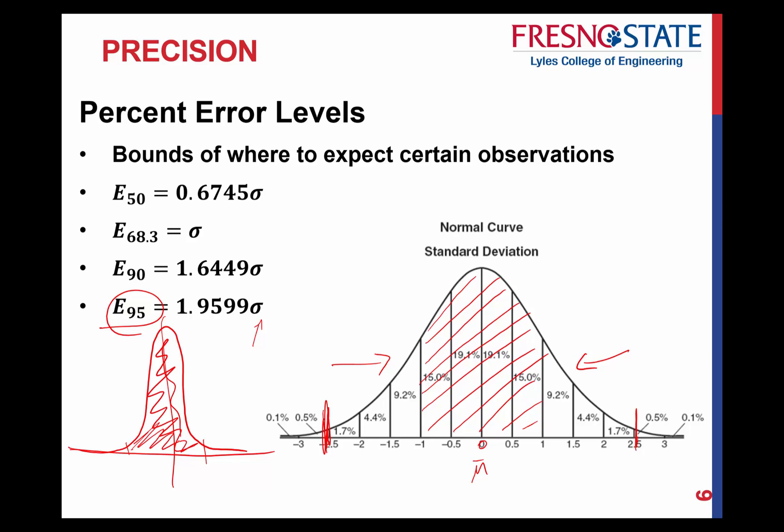What you really want is a very small standard deviation so all error falls within a very small range. Depending on your needs, here are the formulas: for 50% of the error, for 90% of the error, and for 95% of the error. The accompanying graph shows the different areas corresponding to the 90% and 95% error levels.